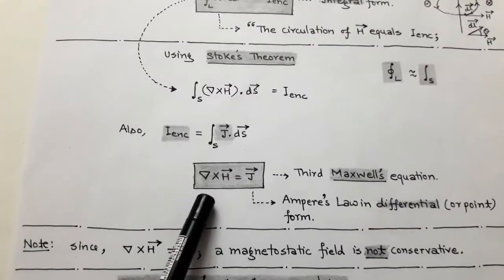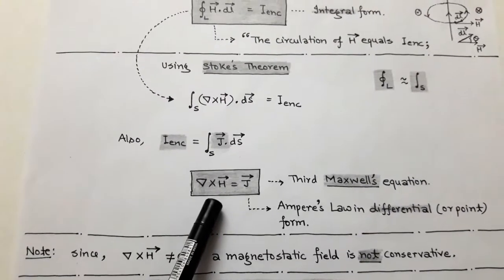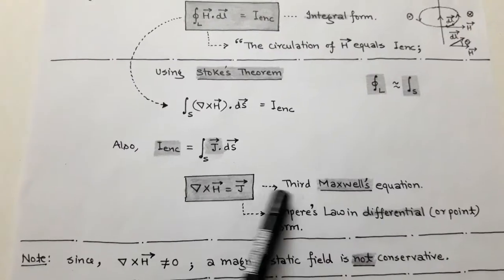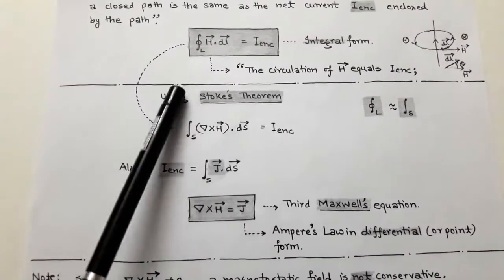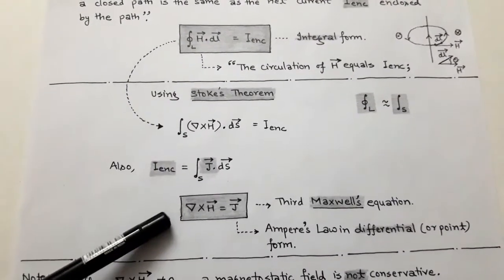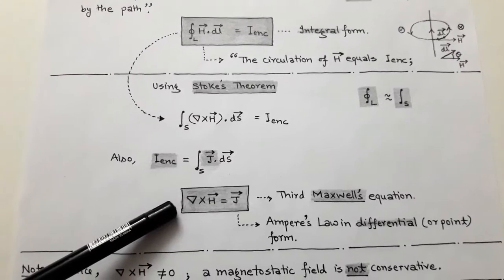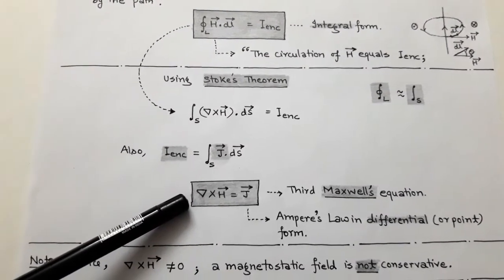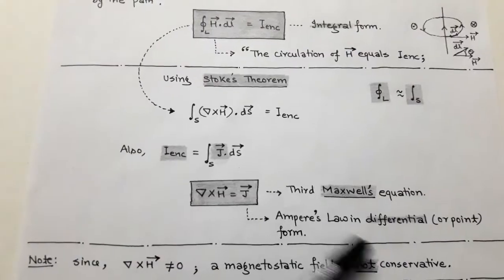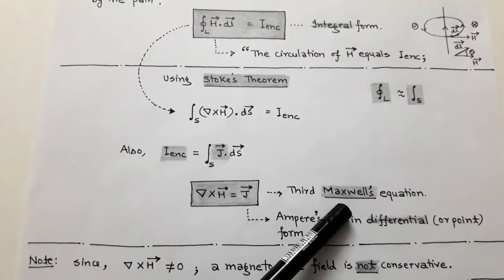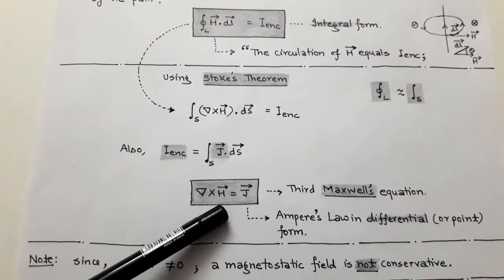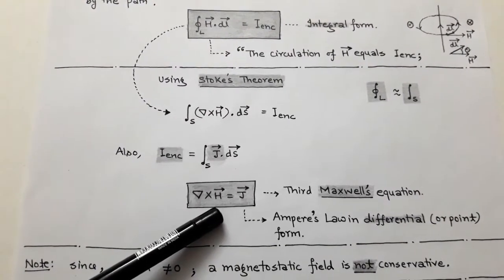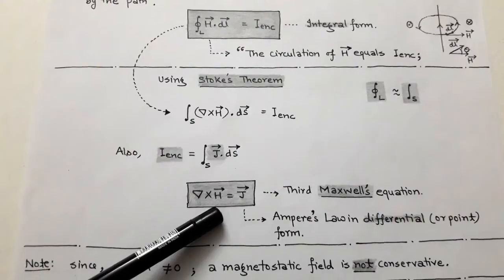This is Ampere's law in differential form. The integral form and the differential form — curl of H equals J vector — is called Maxwell's equation. This is the third Maxwell's equation. So this is about Ampere's law and the introduction of Maxwell's equation.